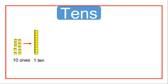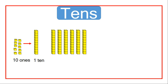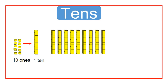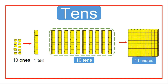What about ten blocks of tens? What number do they make? Let's see. One ten, two tens, three tens, four tens, five tens, six tens, eight tens, nine tens, and ten tens. If we get ten tens, then we have one hundred.